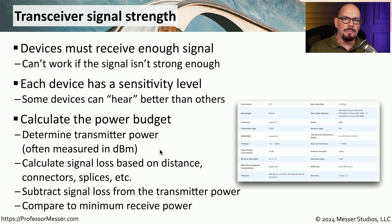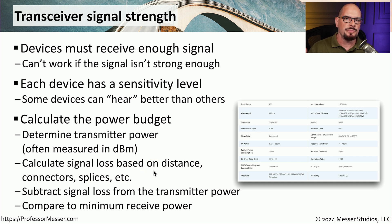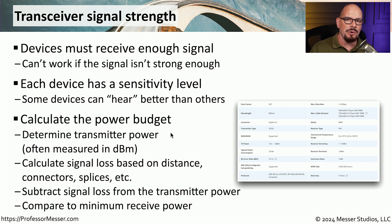We then look at the media being used, determine how long the connection is, and calculate how much signal we'd expect to lose over that distance. We also account for connectors or splices, since each one takes away a little bit of signal. Once we determine total signal loss based on distance and number of connections, we subtract that from the total transmitted power. That final value is the amount of power we'd expect to receive at the end of the connection, which we then compare to the sensitivity value of that particular interface.